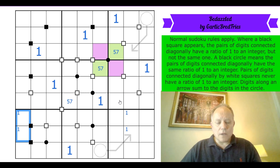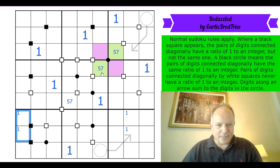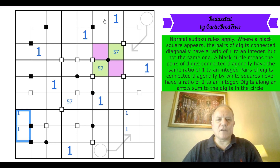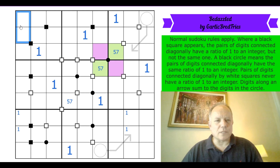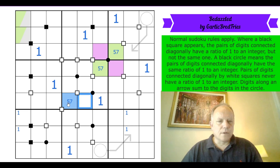Now let's look at fives and sevens. My earlier statement that they can never be on a black circle has been blown out of the water. But they can only have a five or a seven on a black circle if they're opposite a one. Up here there are three cells where five and seven can appear — I'll mark one color as green and another as blue.